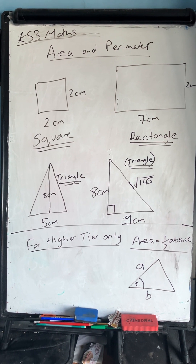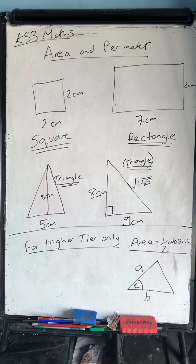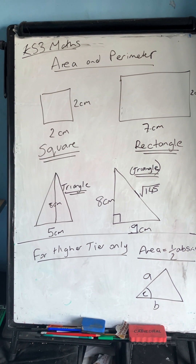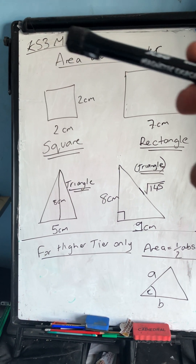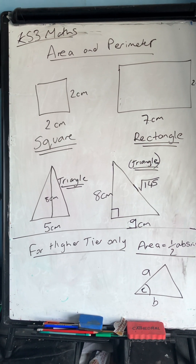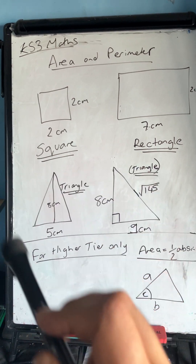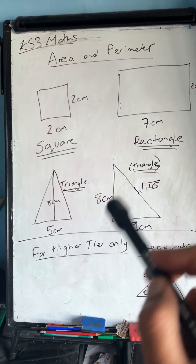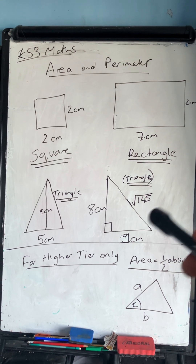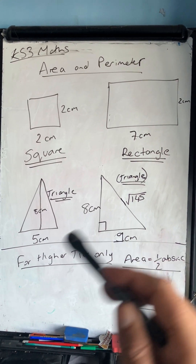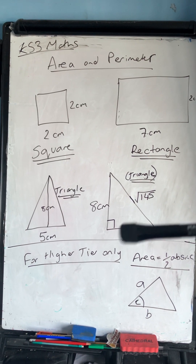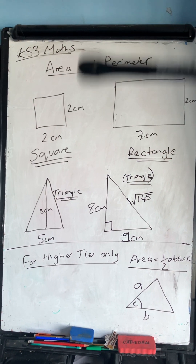Welcome to this short video looking at area and perimeter of 2D shapes, specifically squares, rectangles, and triangles — including right-angled triangles and triangles with a perpendicular height. There's also a little bit at the bottom for higher tier students, which I'll come to at the end. This video is predominantly for Key Stage 3 maths and GCSE foundation.